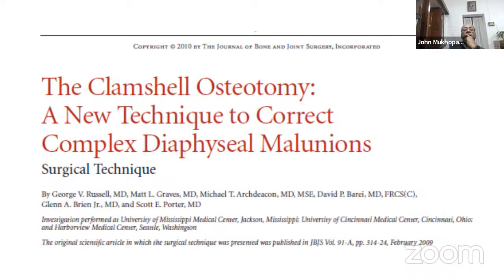Next case: an adult with osteogenesis imperfecta and multiple fractures who did not receive treatment. He came for treatment now — he's extremely short, that's how he walks. He's having pain in his legs and wants something done. One option discussed is a Schanz kabab osteotomy. Looking at the deformity: it's almost straight proximally, then deformed in the middle segment, then straight again distally. For deformities like this, there's an option called the clamshell osteotomy.